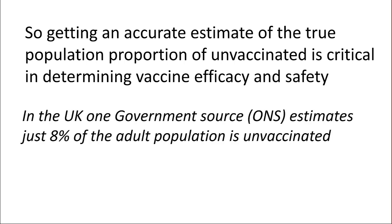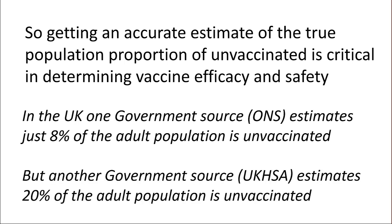In the UK, one government source — the Office of National Statistics — estimates for the COVID vaccine that just 8% of the adult population is unvaccinated. But another government source, the UK Health Security Agency, estimates about 20% of the adult population is unvaccinated. You can see just how big a problem this is and how critical it is.